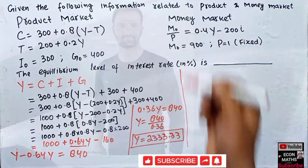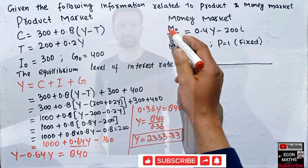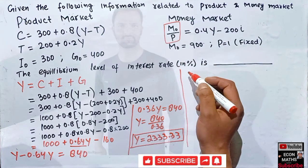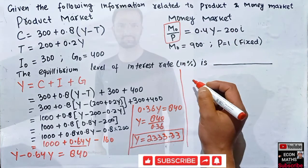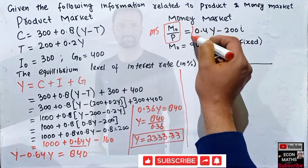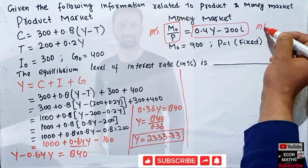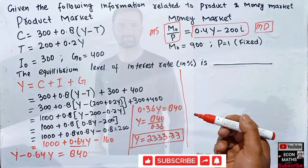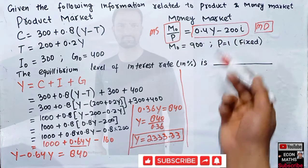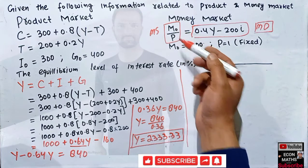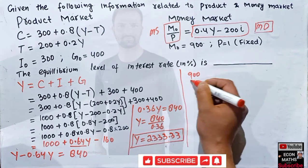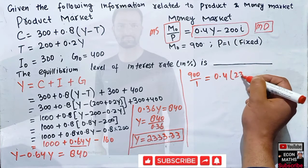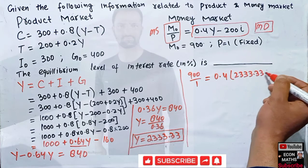For the money market equilibrium, real money supply M₀/P = 900/1 = 900 must equal money demand. So we set 900 = 0.4Y - 200i, inserting the equilibrium income Y = 2333.33: 900 = 0.4 × 2333.33 - 200i.